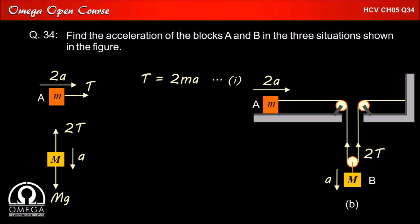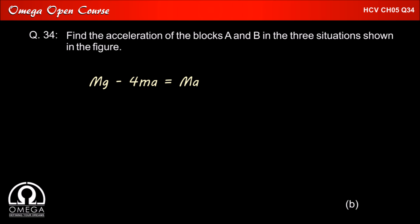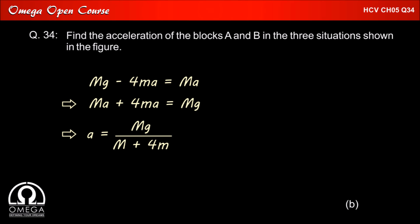For block B, it is being pulled down by gravitational force capital Mg and pulled up by tension 2T. As a result of these two forces, it is moving downwards with acceleration A. Therefore, capital Mg minus 2T must be equal to capital MA. Putting the value of tension from equation 1 into equation 2, we get capital Mg minus 4MA equal to capital MA. Thus A equals capital Mg divided by (capital M plus 4M). With capital M equal to 5 kg and M equal to 2 kg, we get acceleration as 5g by 13.